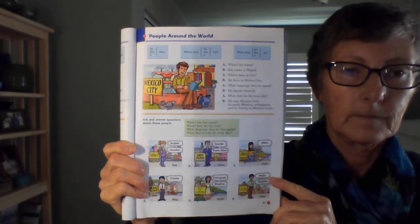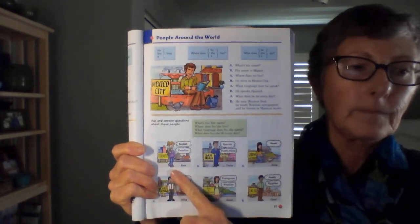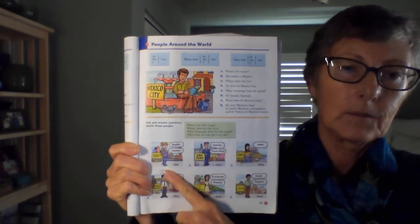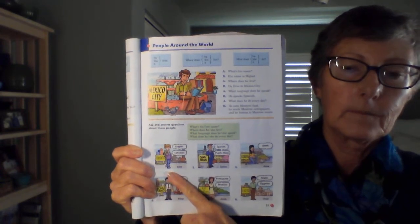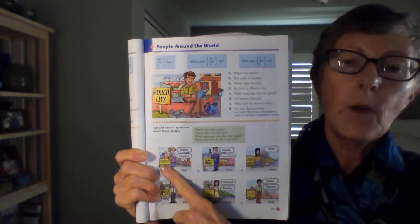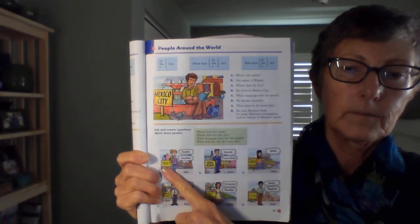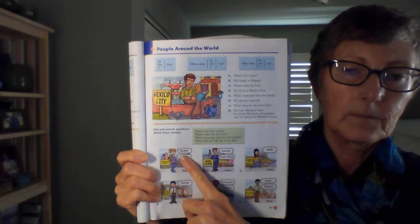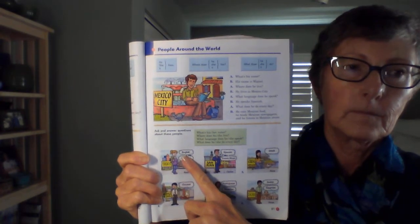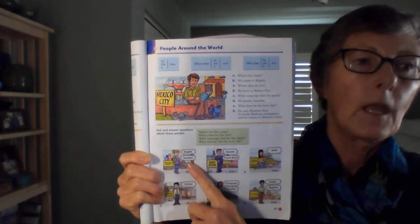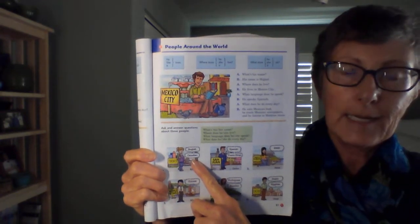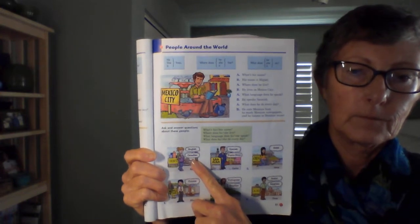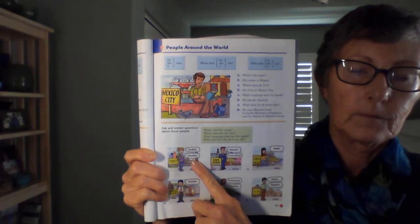Now we're going to do the practice exercises one through six. Number one — we'll begin. What's her name? Her name is Kate. Where does she live? She lives in Toronto. What language does she speak? She speaks English. What does she do every day? She eats Canadian food, she reads Canadian newspapers, and she listens to Canadian music.